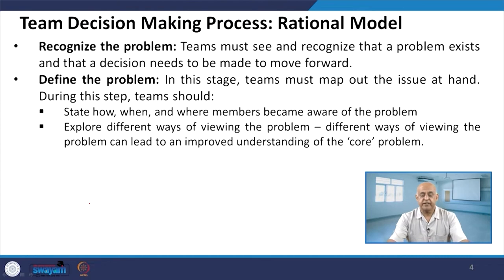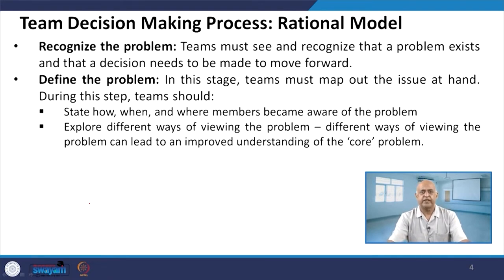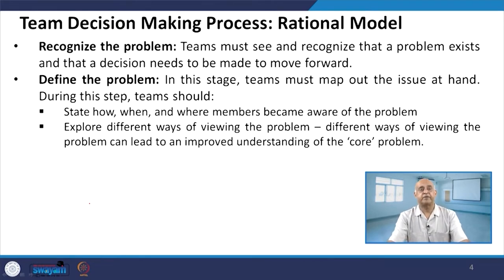The rational model of team decision making begins with recognizing the problem. The team must see and recognize that a problem exists and that a decision needs to be made to move forward — otherwise, the problem will hinder the project or goal. After recognizing the problem, the team defines it: teams must map out the issues at hand, stating how, when, and where members became aware of the problem, and explore different ways of viewing it to improve understanding of the core issue.